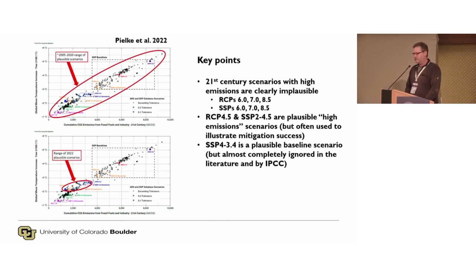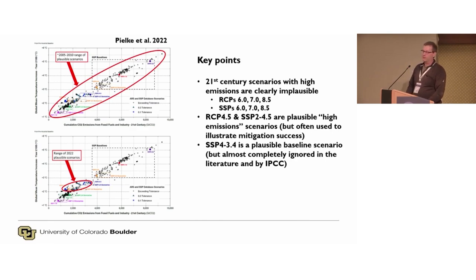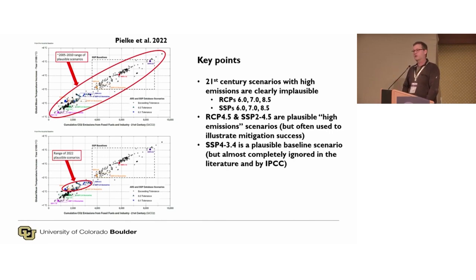Here are some key points. The high emission scenarios are clearly implausible according to the screen. What's a high emission scenario? Anything over 6 watts per meter squared. RCP 4.5 and SSP 2-4.5 are plausible high emission scenarios. I know in the literature they're often used to represent mitigation success, but today I think we can say based on this method that they are in fact high-end scenarios. A business-as-usual or current-policy-consistent scenario is a 3.4 watts per meter squared scenario — and that scenario is almost never studied by anyone.